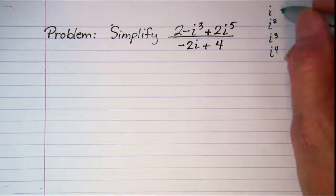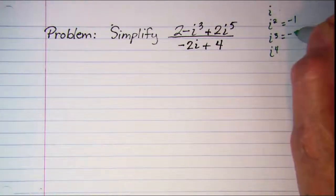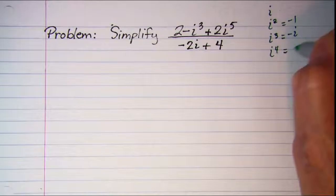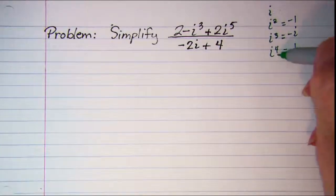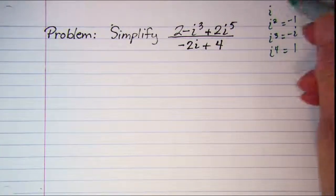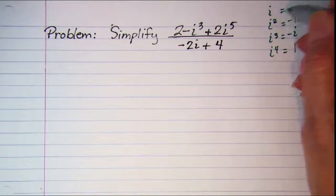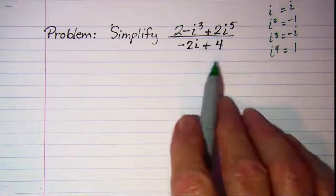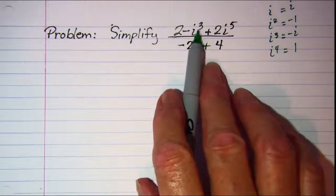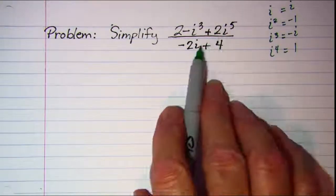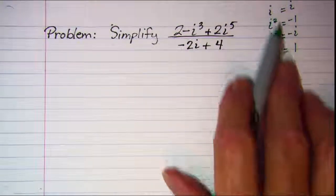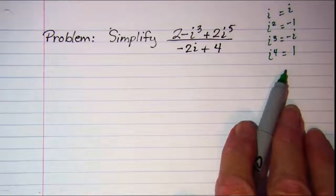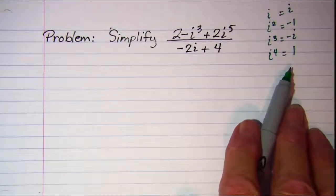We have i, negative 1, negative i, 1, and then for i to the 5th I have to come back up here to i. So the first thing I want to do is change these powers of i so that we have either i or a constant term.